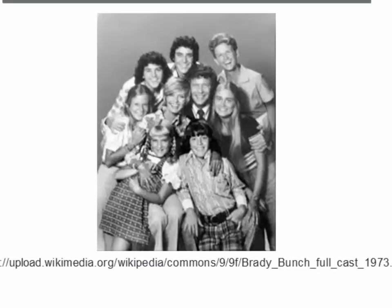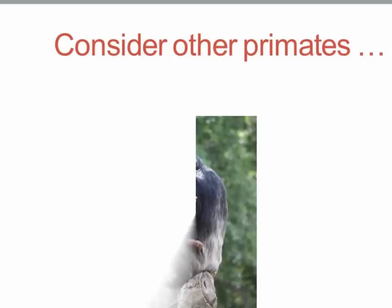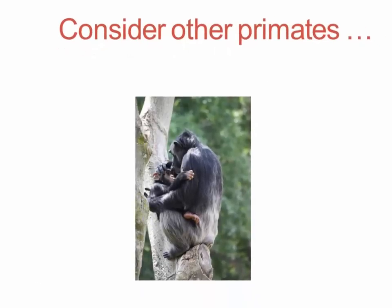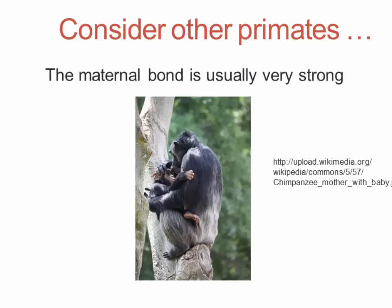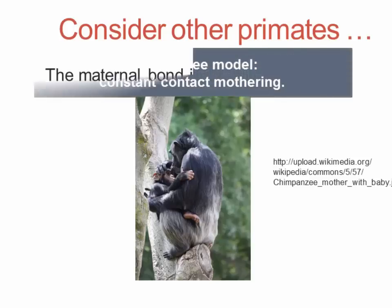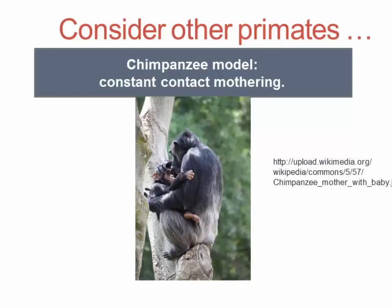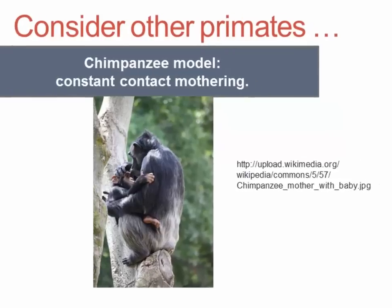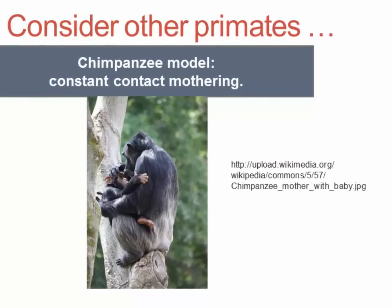Nobody in the photo is the offspring of Florence Henderson, and nonetheless in watching the show we freely go along with the idea that we're watching siblings. If we consider other primates and ask how they know who their kin are, when it comes to mothers and offspring there's often a tight maternal bond that's very strong.